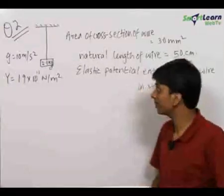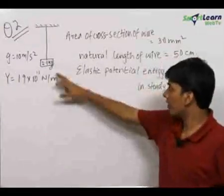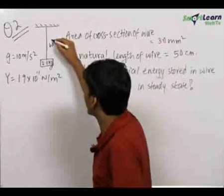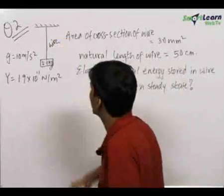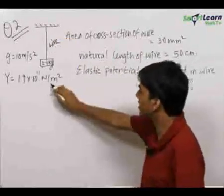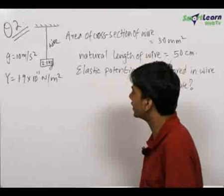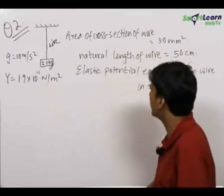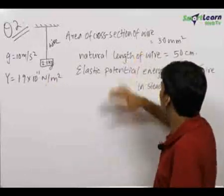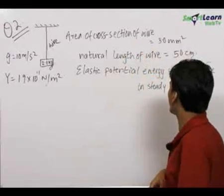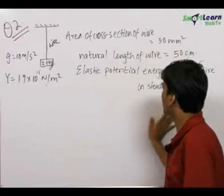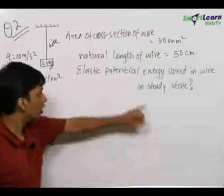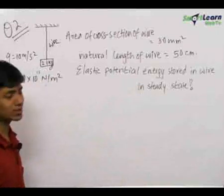Here is an interesting question. We have a block of mass 2.1 kg hanging by a wire whose Young's modulus of the material of the wire is given to be 1.9 × 10¹¹ N/m². The area of cross section of the wire is given and the natural length of the wire is also given. We need to find out the elastic potential energy stored in the wire in steady state.